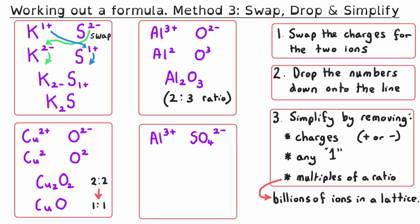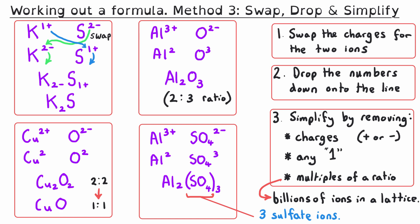For aluminium sulfate, Al is 3+ and sulfate (SO₄) is 2−. Swap the numbers and remove the charges, drop them down, and place brackets around the sulfate because we have three of that molecular ion. There are no ones to remove, the ratio is two to three so it can't be simplified further, and the formula is Al₂(SO₄)₃. This method is generally the fastest, which is why most people prefer it.